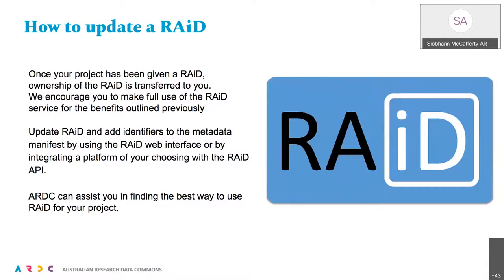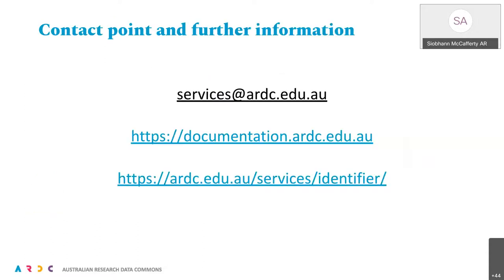How do you update a RAID? Once you've been given a RAID, ownership is transferred to your project and your organisation. You'll be able to update and add identifiers to it using either the RAID web interface or by integrating it with a platform of your choosing via the RAID API. ARDC can assist you in finding the best way to use it for your project — looking at your workflows and how to do that integration. All of these services are on our websites, with much more information in the documentation and the particular Identifier Services website. Thank you very much.